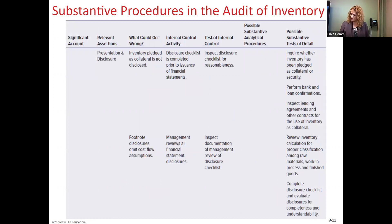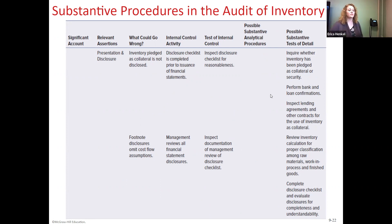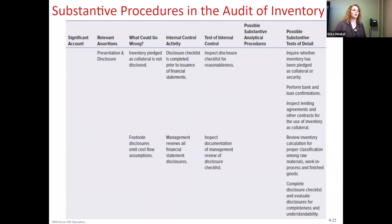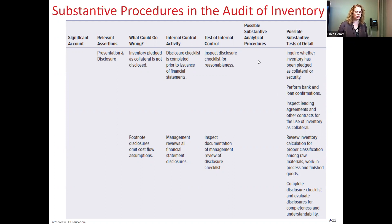Other substantive procedures include checking whether any inventory is pledged as collateral or security for loans — if so, they would need to perform bank and loan confirmations and potentially include disclosures. Also looking at proper classification of inventories — whether it's raw materials, work in process, or finished goods.